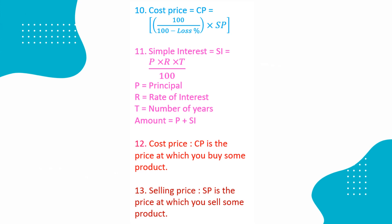Amount equal to principal plus simple interest. Cost price is the price at which you buy some product. SP is the price at which you sell some product.